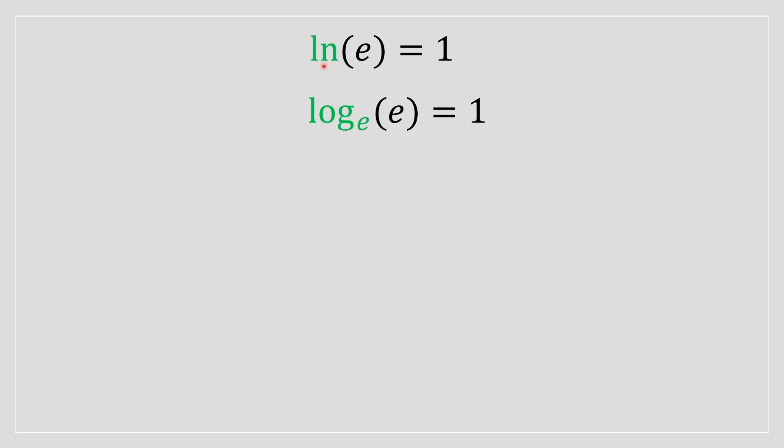Right, first things first, try to rewrite ln of e as log base e of e equal to 1. The reason why we have to do this is because our goal is essentially rewriting in exponent form. What we have right now is a logarithmic form. We want it in an exponent form.